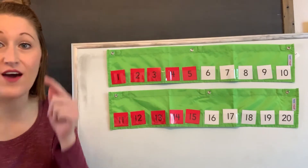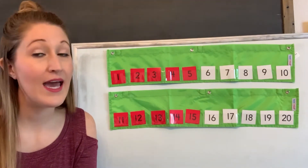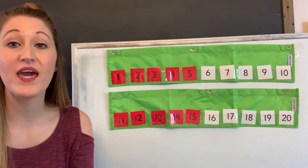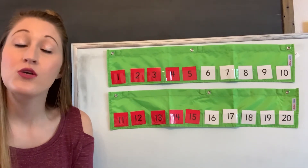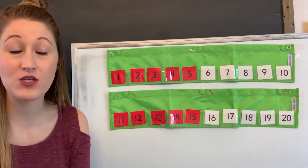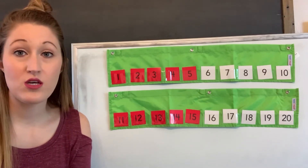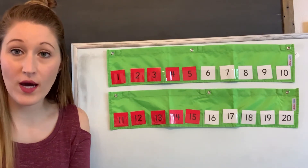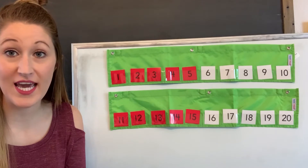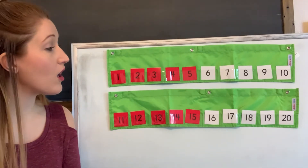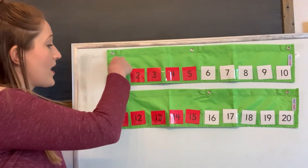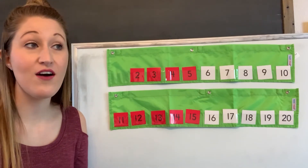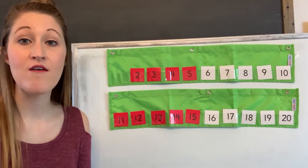I'm thinking of a secret number between one and 20, and I'm not going to tell you what it is. You have to figure out what number I'm thinking about based on questions that you ask me. So you can ask a variety of questions when you're playing this game. One of those questions could be: is your number odd or even? The secret number that I have today is an even number.